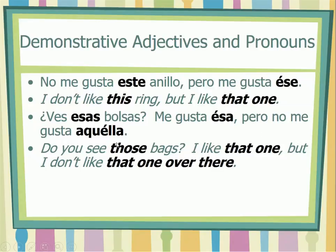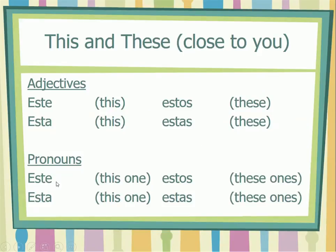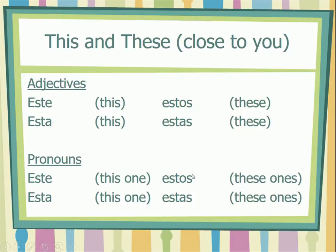Now let's see a chart with all the demonstrative adjectives and pronouns. We use 'this' and 'these' when something is close to you. In that case, we use este for masculine singular, esta for feminine singular, estos for masculine plural, and estas for feminine plural. When something is very close to the person speaking, use este, esta, estos, estas — and the same forms serve as pronouns meaning 'this one' or 'these ones.'